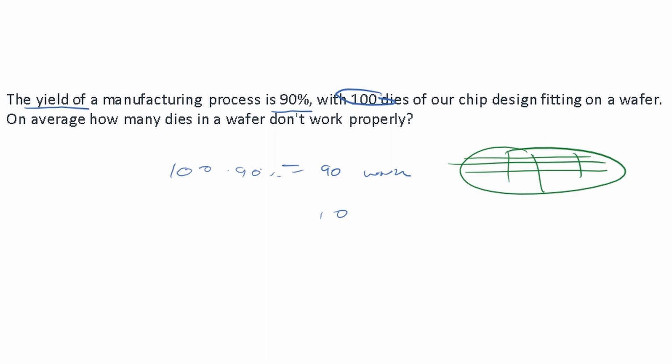10 of these don't work, because if our yield is 90%, that means we have 90 out of 100 that are correctly made, but 10 are not correctly made. So that's how we look at this problem with yield and the number of dies we're given.